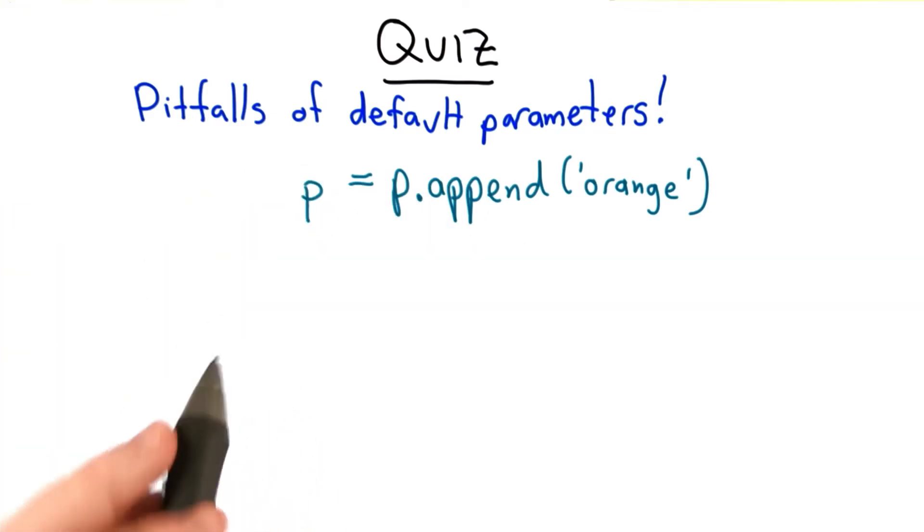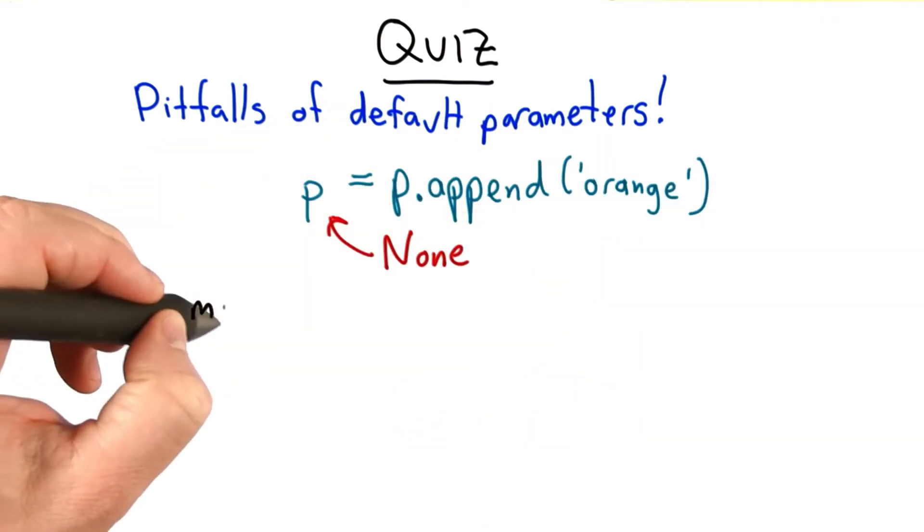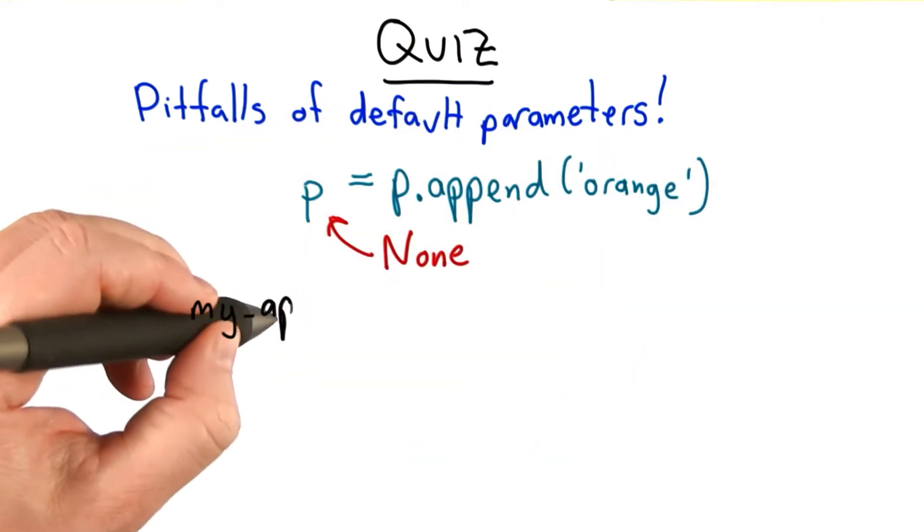So after this the value of p will be None, which is probably not what we wanted. There are lots of situations where we might want to use append in this kind of functional way. We might want to pass in the result of appending to a new function. So I'm going to try to define a function that does that.